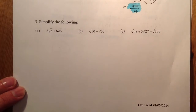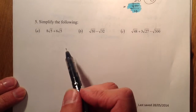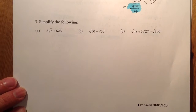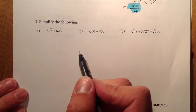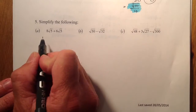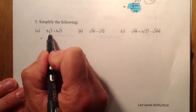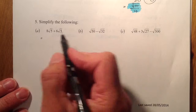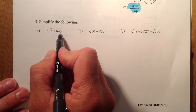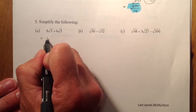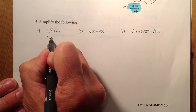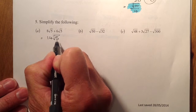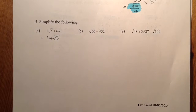Question 5 — we're going to simplify. First one is quite straightforward: I've got 8 root 5 plus 6 root 5. Eight of them plus six of them gives me 14 of them, and I'm working with root 5s, so the answer is 14 root 5.